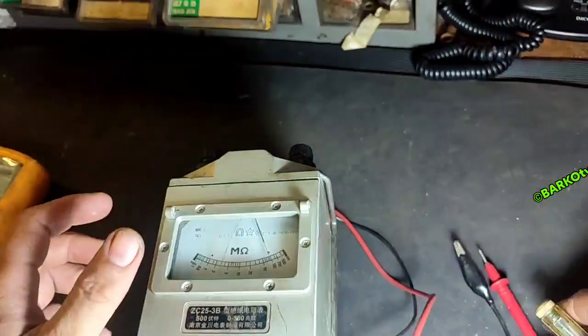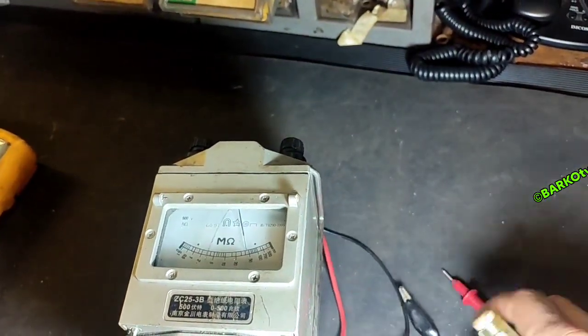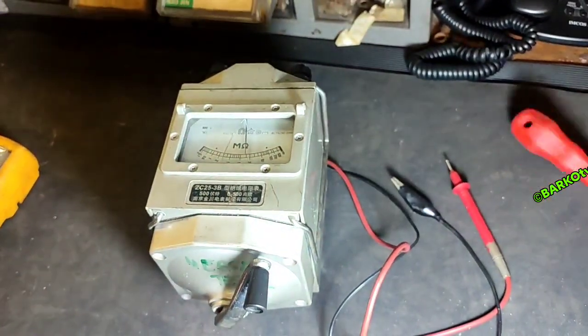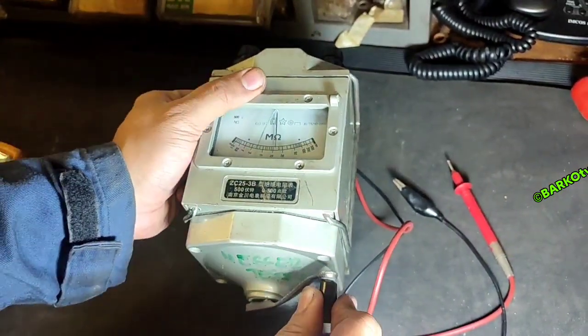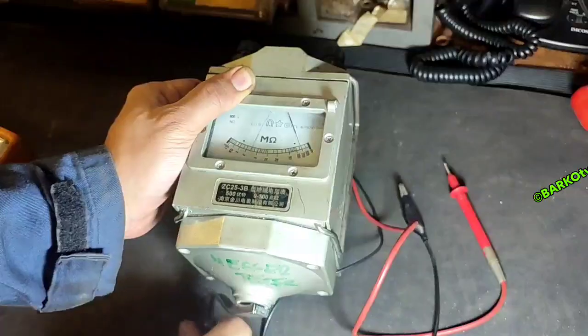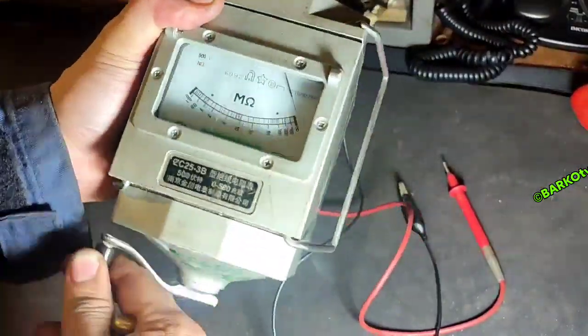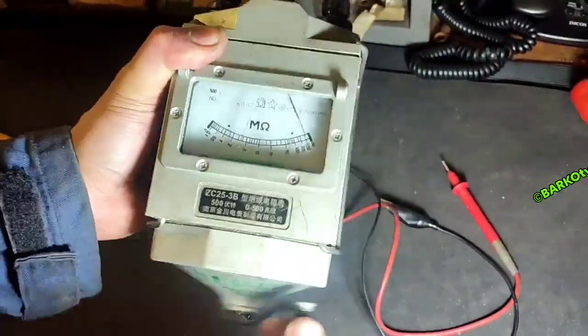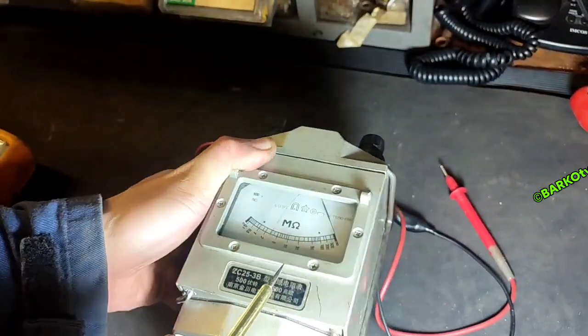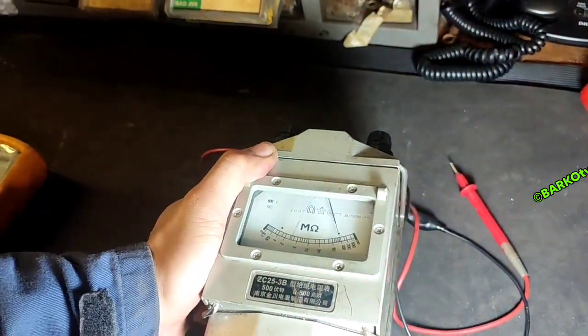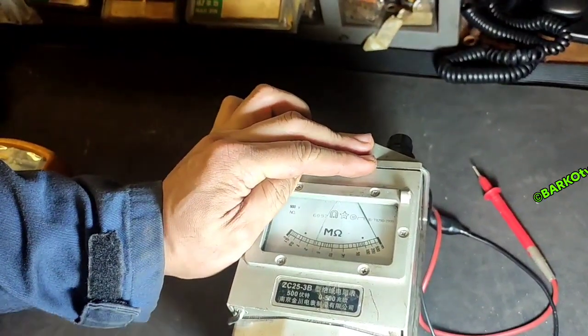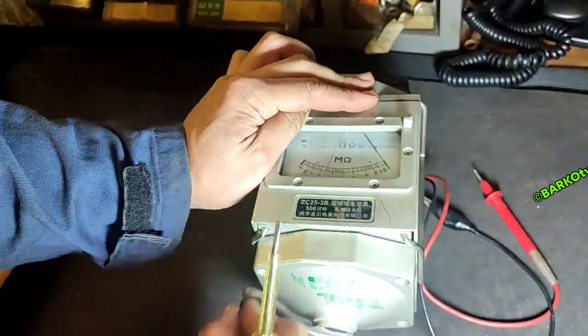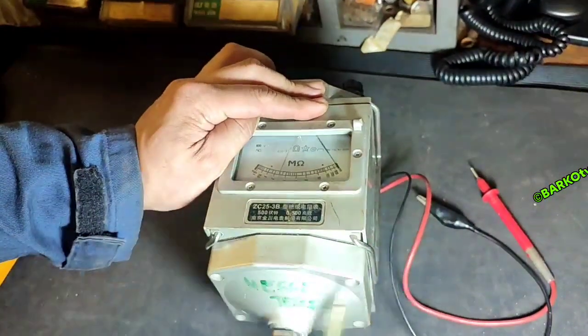To check this hand crank IR tester if it is working, you need to separate these two probes. We will check - it must be at the maximum reading if the two probes are separated, so that we guarantee this instrument is totally working. As you can see, this is old school but it is working.